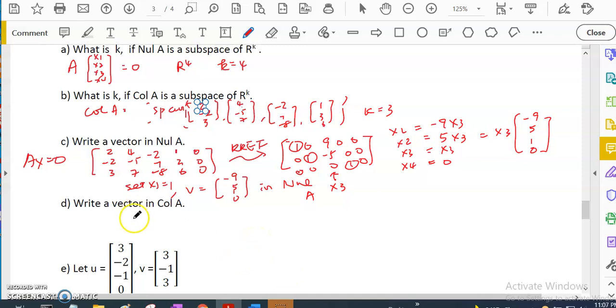Write a vector in column A. That's super easy because any column vector will belong to column A. We'll just choose the first one: [2, -3, 3] is in column A because the linear combination would use [1, 0, 0, 0].